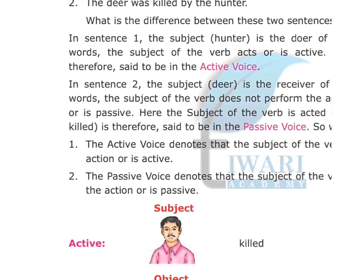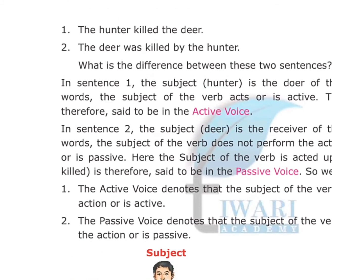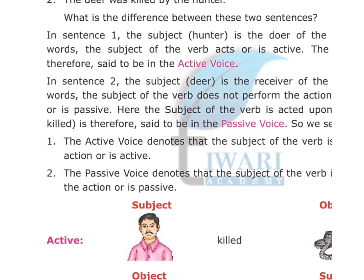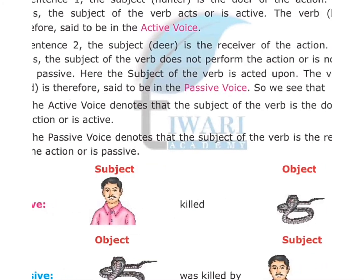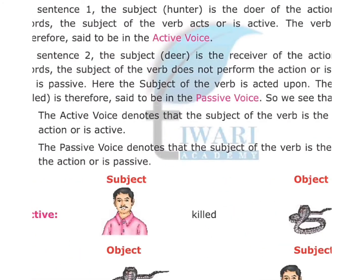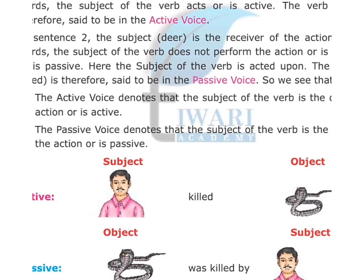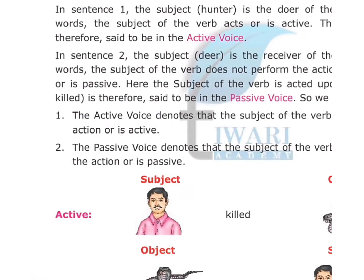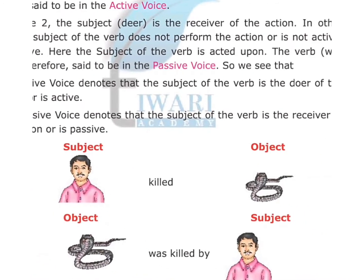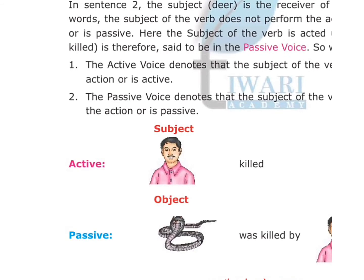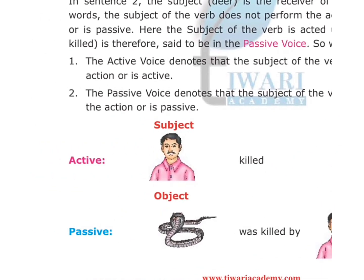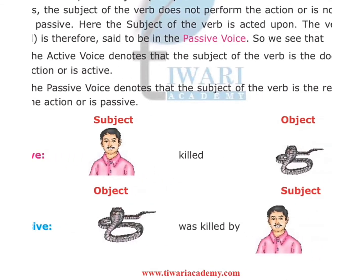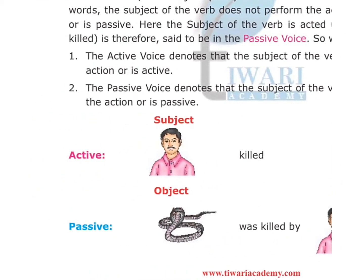Why is the second sentence in passive voice? Because in sentence two, the subject 'deer' is the receiver of the action. The subject of the verb does not perform the action — it is not active, it is passive. The verb 'was killed' is therefore said to be in the passive voice. Active voice denotes that the subject is the doer of the action; passive voice denotes that the subject is the receiver of the action.